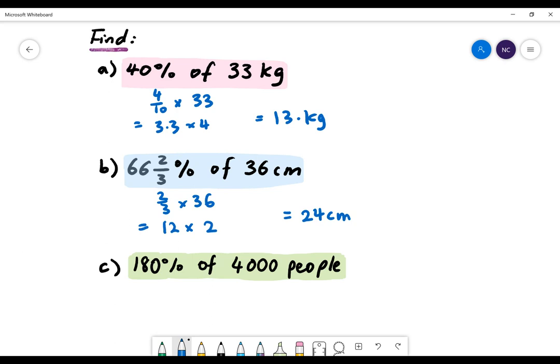Now our next example, we want to find 180% of 4,000 people. It is important to understand that 180% is simply 100% plus 80%. We already know what 100% is. 100% is 4,000 people. So we want to find what 80% equals. 80% is 4 fifths. So we want to find 4 fifths of 4,000 people. Take 4,000, divide it by 5, we'll be left with 800, and multiply it by 4. So we're left with 3,200. So we want to add 4,000 by 3,200. Our answer will then be 7,200 people.